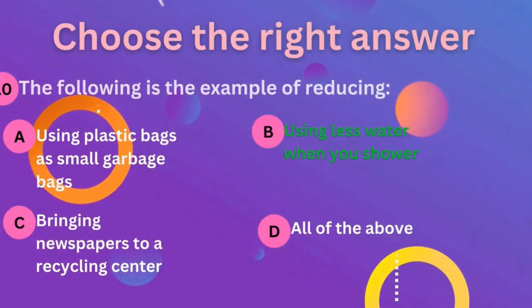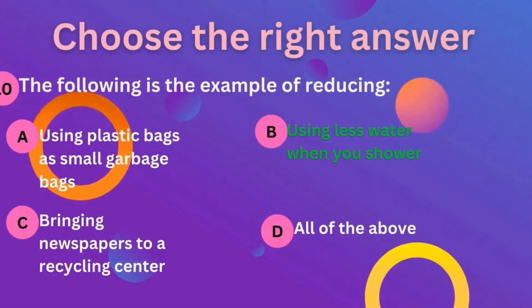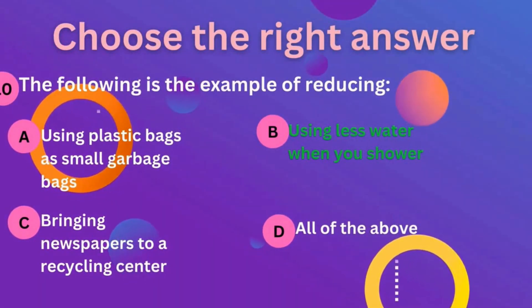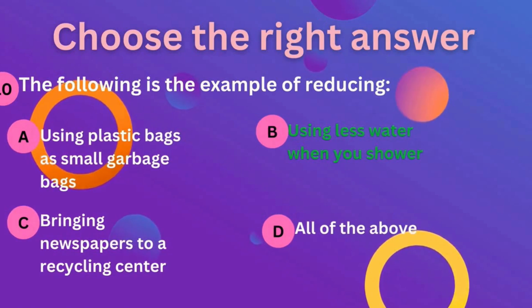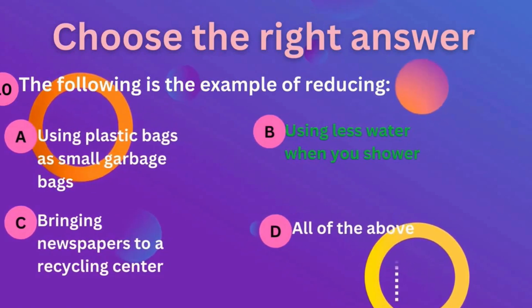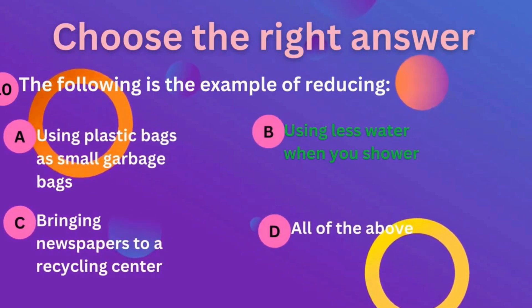Tenth question: which of the following is an example of reducing? The correct answer is B — using less water when you shower.